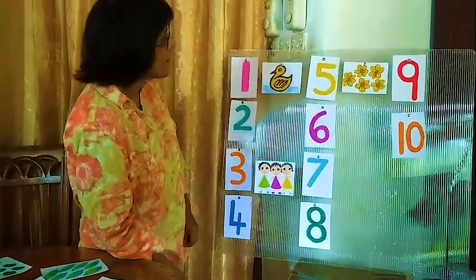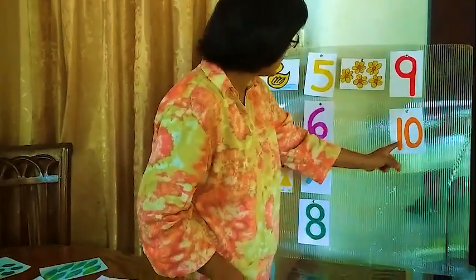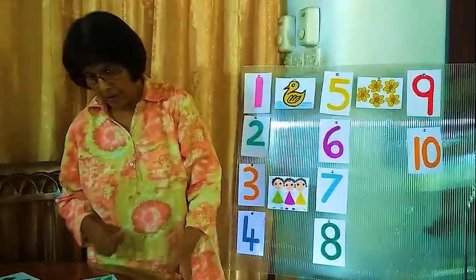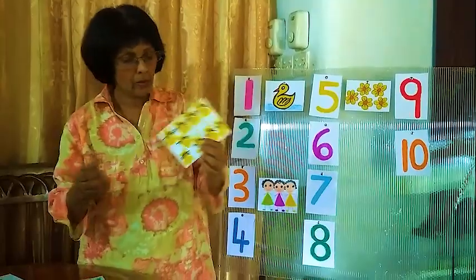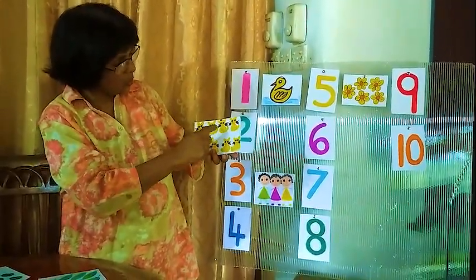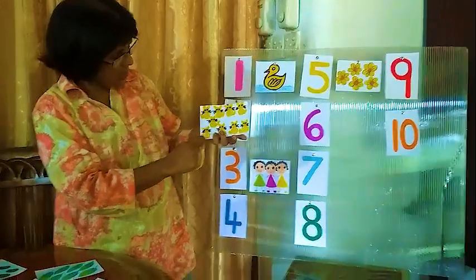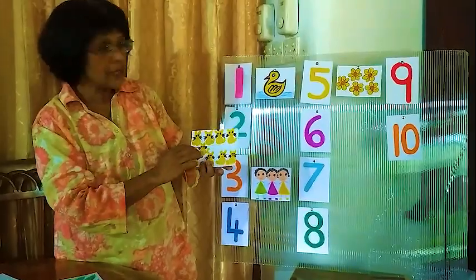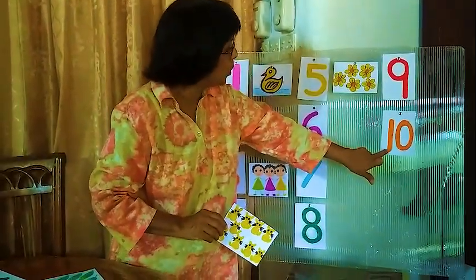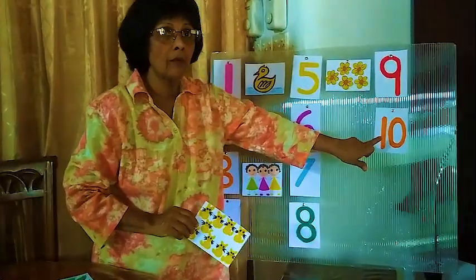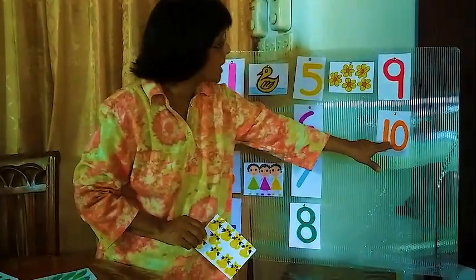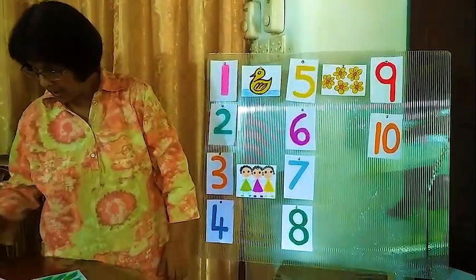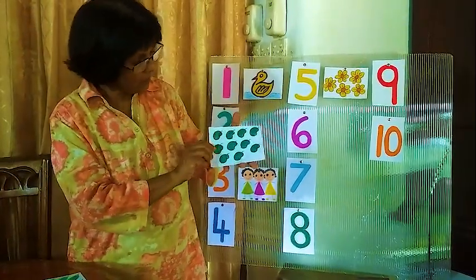Now we will go to number 10. So we will find 10. There are a lot of cats here: 1, 2, 3, 4, 5, 6, 7, 8, 9 — 9 cats. Is this 9? No. This is 10, we are finding pictures for number 10, so this is wrong. So we will go to this one — mangoes.